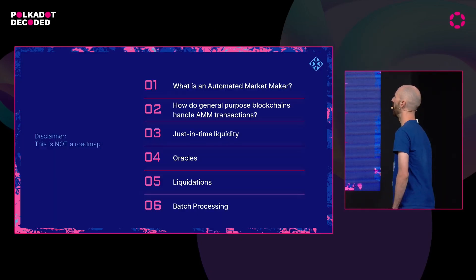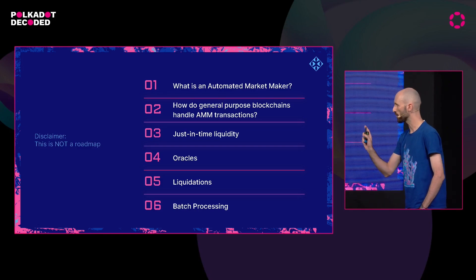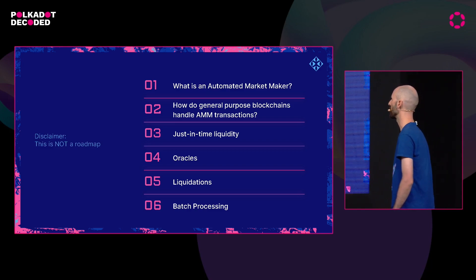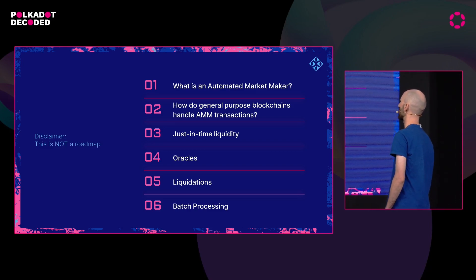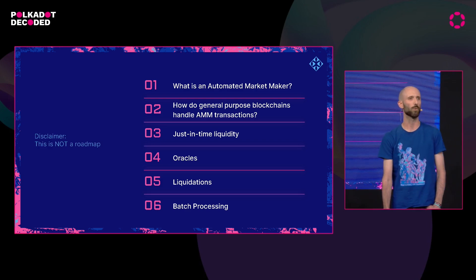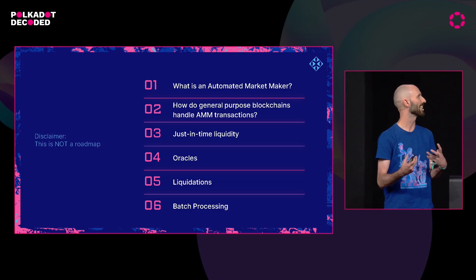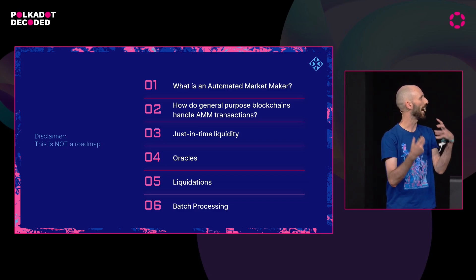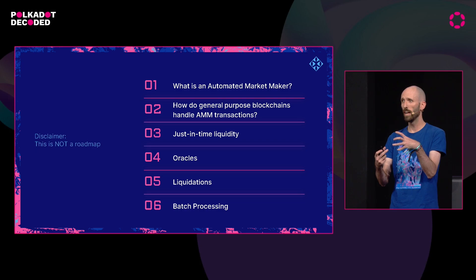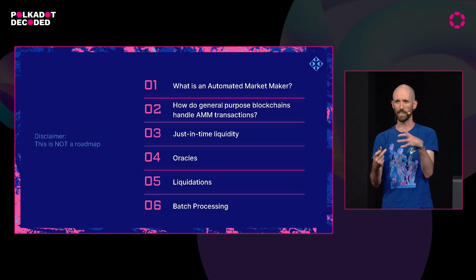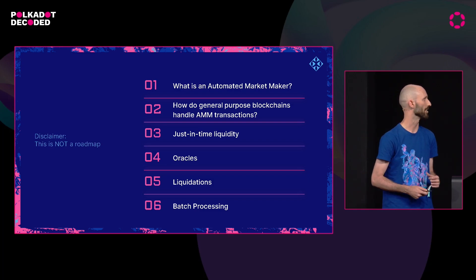As we go through how to build a block for an automated market maker, we're going to touch on some things that you've probably heard about if you've been paying any attention to DeFi — like just-in-time liquidity, oracles, liquidations — but we're going to do this all in the context of talking through how do we build a block, or how do we appropriately constrain the building of blocks for automated market makers?